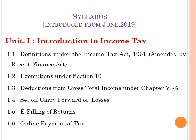There are three types of deductions: deductions in respect of payments, deductions in respect of income, and other deductions. These are covered under Section 80, including Sections 80C, 80CC, 80D, 80DD, 80G, 80U, and others. Sub-topic 1.4 covers set-off and carry forward of losses. Past losses in the case of business may be carried forward. Sub-topic 1.5 covers e-filing of returns — the procedure for filing returns. And the last part of Unit 1 is online payment of tax.